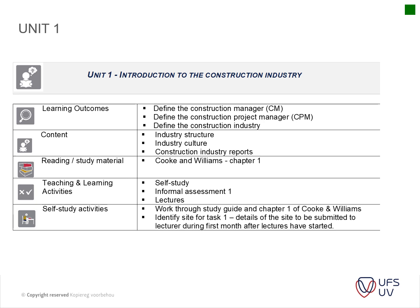In this unit we're going to look at Chapter One of Cook and Williams, particularly defining what the construction manager is, what the CPM is, and defining the construction industry. It incorporates quite a bit of other industries — like mining, for instance, has a lot of construction in it, the production industry, etc. We're going to look at industry structure, the Egan report, the Latham report, which will give you background on the construction industry and the challenges we've been grappling with for a long period.